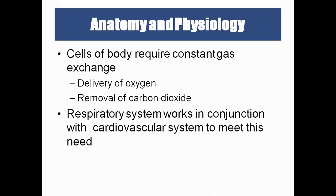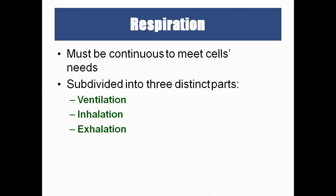We need to respire because every cell needs oxygen to produce ATP — the energy currency of the body. The respiratory system works in conjunction with the cardiovascular system: the respiratory system oxygenates the blood and removes carbon dioxide, while the heart pumps oxygenated blood to all body parts and returns deoxygenated blood to the lungs. Both systems always work conjointly and coordinatedly.